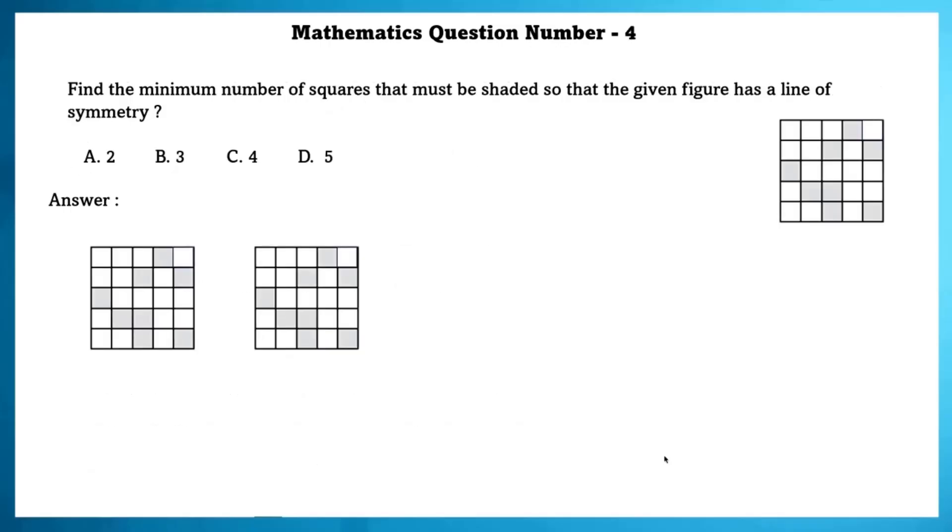Mathematics question number 4. Find the minimum number of squares that must be shaded so that the given figure has a line of symmetry. Now if we do it left side diagonally we need to shade 7 boxes. But right side diagonally we only have to shade 3 boxes. So if we draw the line of symmetry in the right side diagonal the minimum number of squares will be shaded.